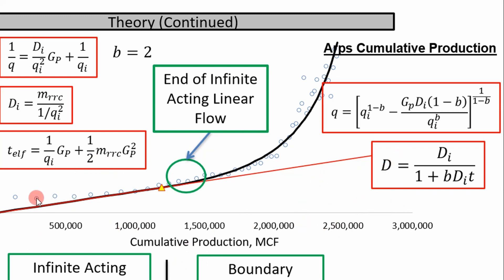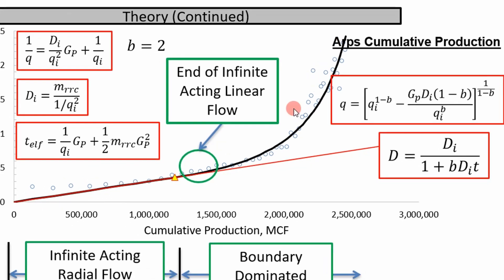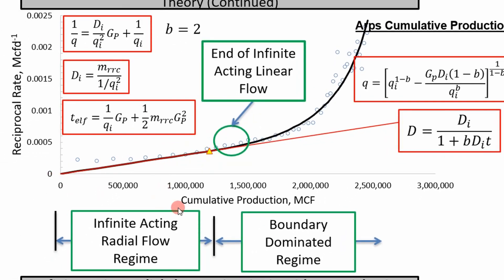But you can see here, this data right here, we have an infinite acting flow regime. In this case, it's linear flow up to this point. And then you have assumed boundary dominated the rest of the way.